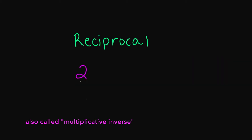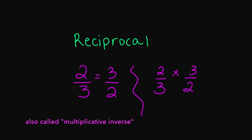What about two over three? The reciprocal of two over three is going to equal three over two. Because if I multiply two over three times three over two, this gives us six, and three times two also gives us six. Six divided by six is going to equal one.